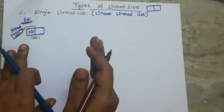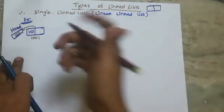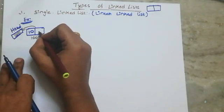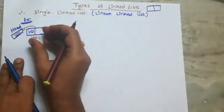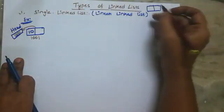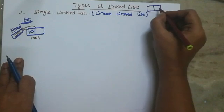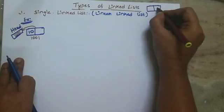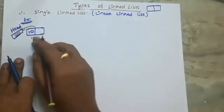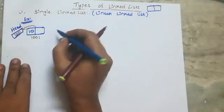Now we have one node. This is the remaining nodes. In this situation, we store the null pointer. If you store null, this is a one node. Here is the first node. The second node stores the address. Here is the next node and here is the null node.